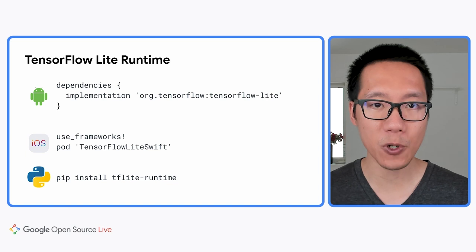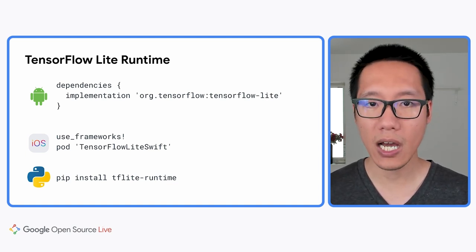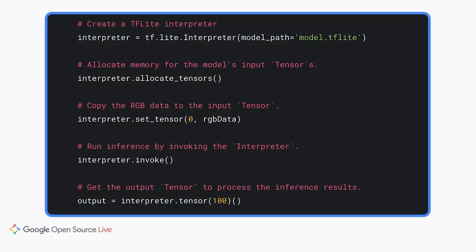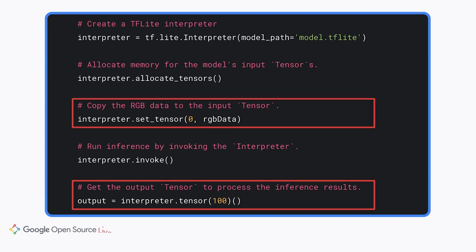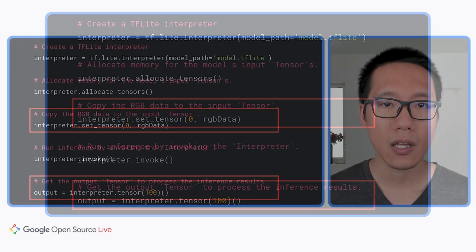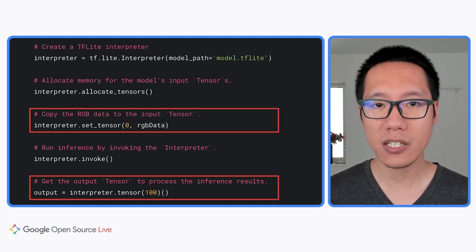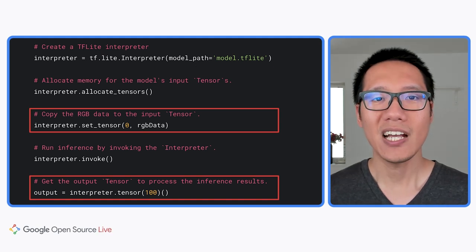You will need to add the TensorFlow Lite runtime to your application — this library is different from the Task Library shown earlier. There are Android, iOS, and Python libraries that you can choose from. The TensorFlow Lite runtime requires the model inputs and outputs to be number arrays, rather than the high-level data types as in the case of the Task Library. So you will have to write all the pre-processing and post-processing code yourself — for example, converting from an image object to a float array representing the image in the RGB format. You also need to specify which tensor is the input and output of the model. The Android and iOS APIs are very similar.